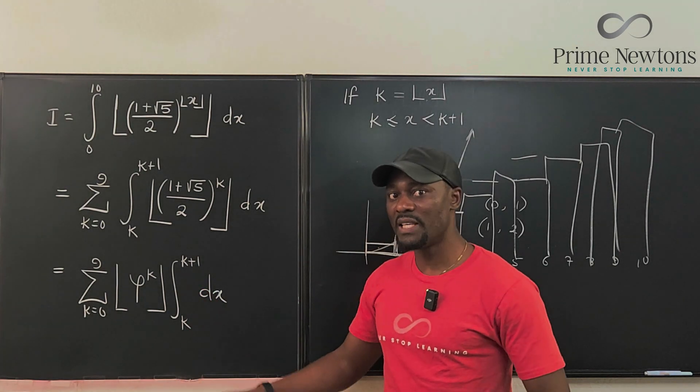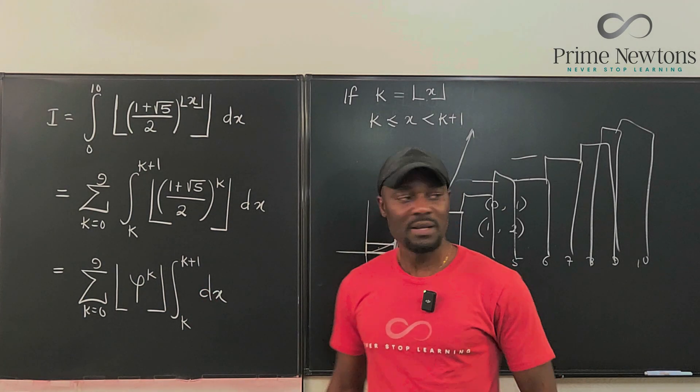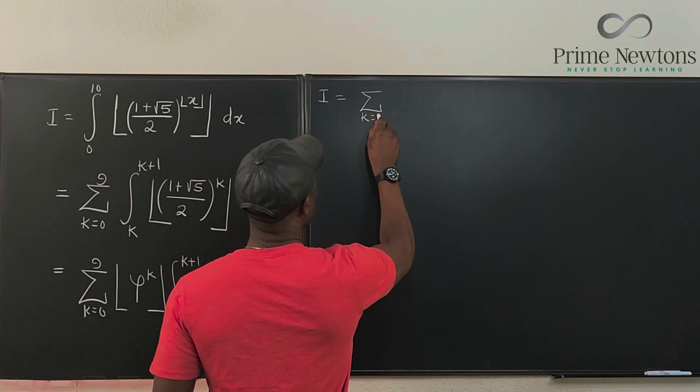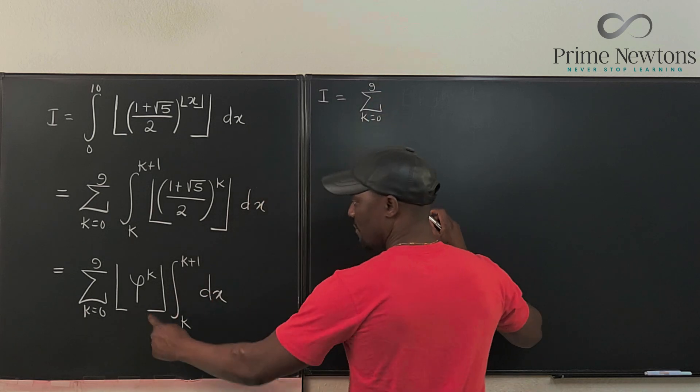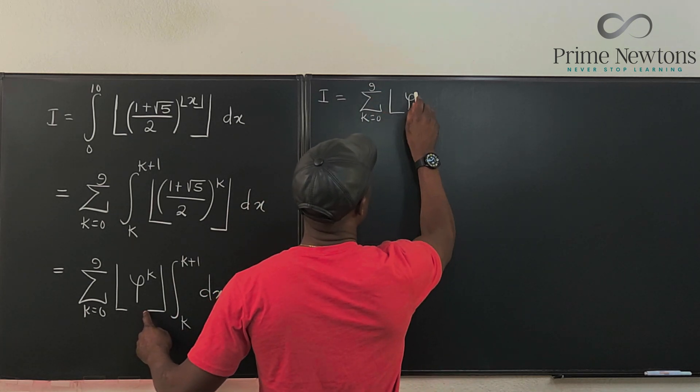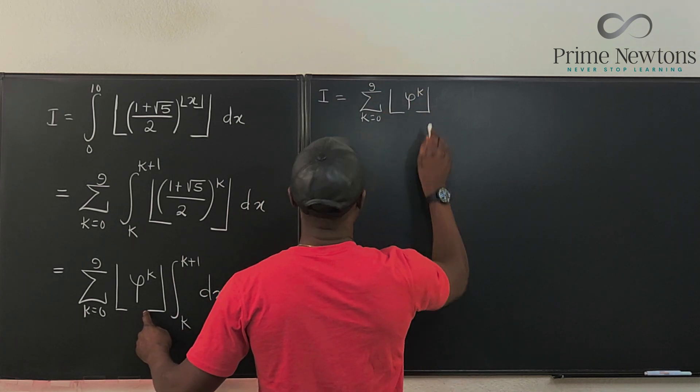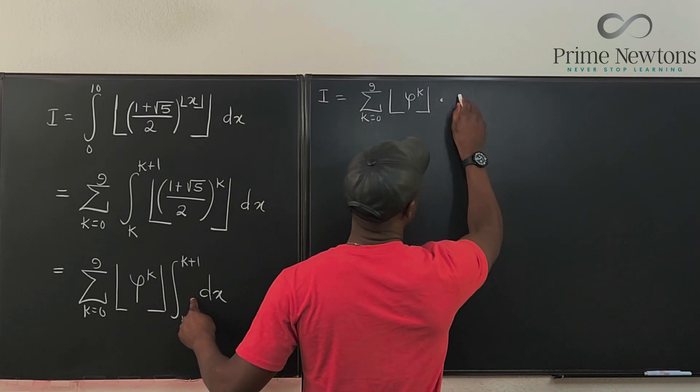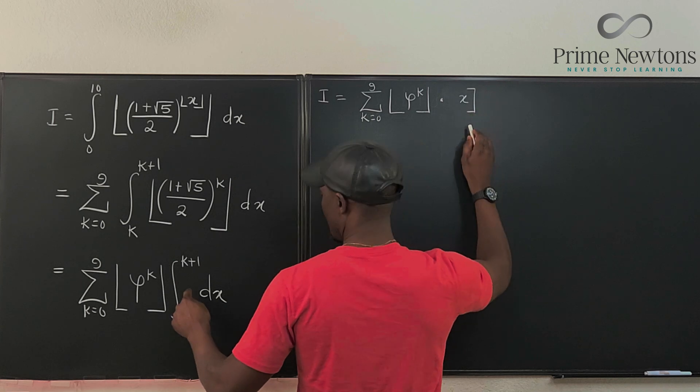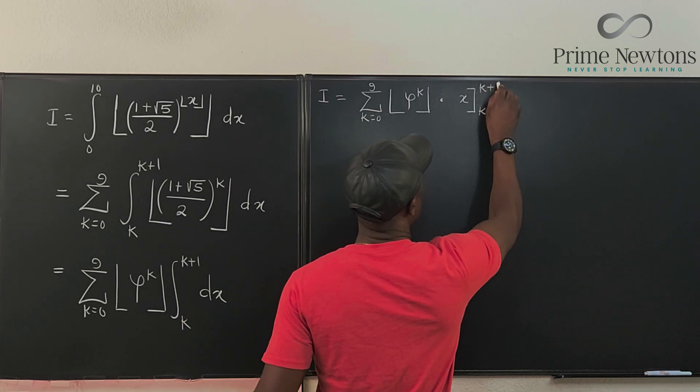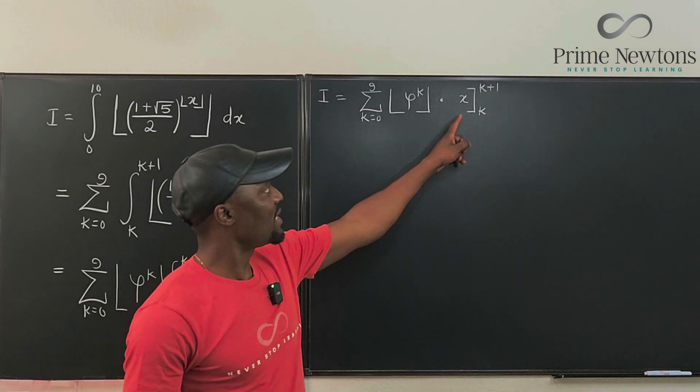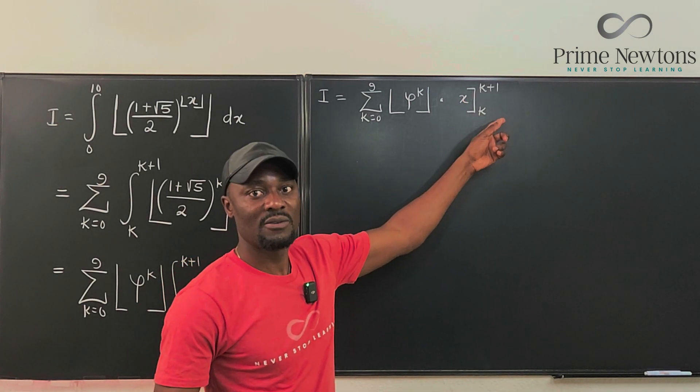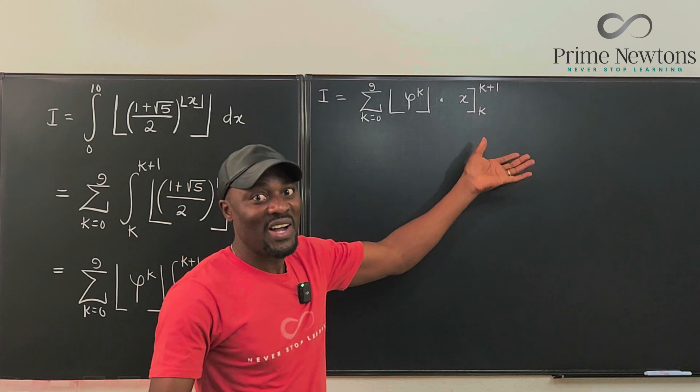So what is here is just one. If I integrate one, what do I get? The sum from K equals zero to nine of all the floors of Phi to the K multiplied by, if you integrate this, you're going to just get X evaluated from K to K plus one. If you evaluate this, you're going to get K plus one minus K, which is just one.